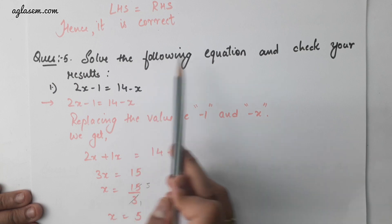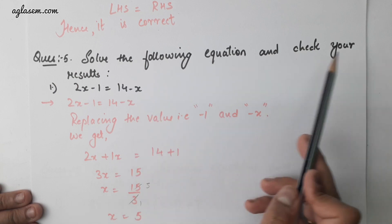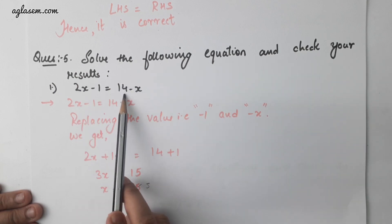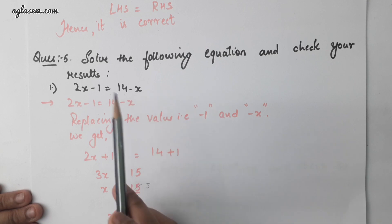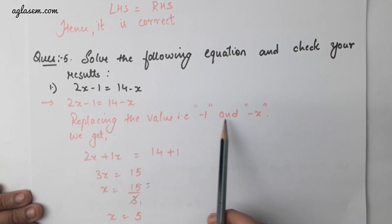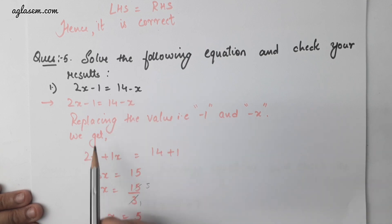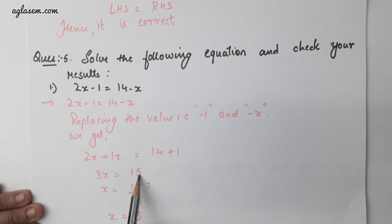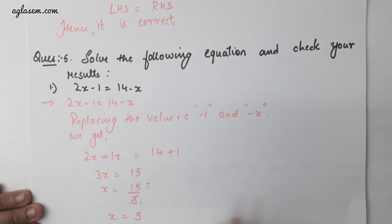Question number 5: solve the following equation and check your result. 2x minus 1 equals to 14 minus x. Replacing the values, we get 2x plus x equals to 14 plus 1, so 3x equals to 15. Therefore, x is equal to 15 divided by 3, which is 5.